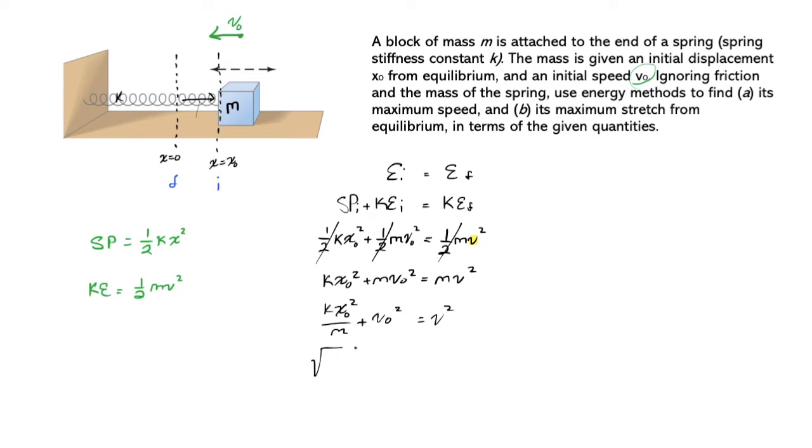Then taking the square root of both sides would reveal our answer: k x naught squared over m plus v naught squared, underneath a radical.